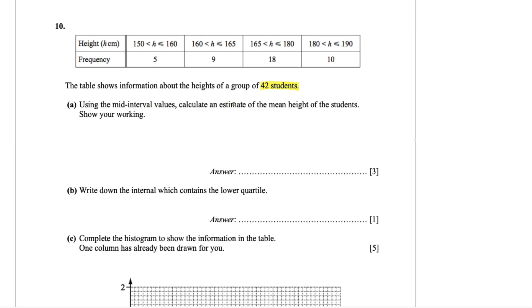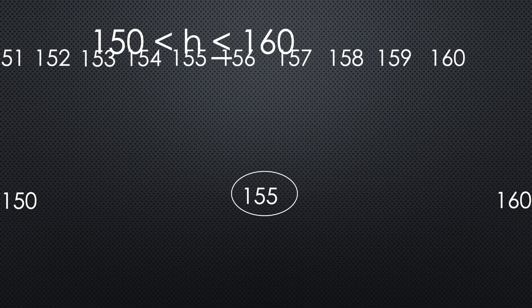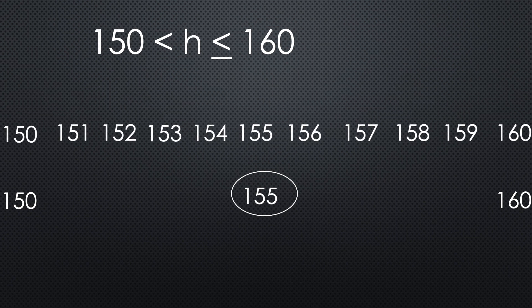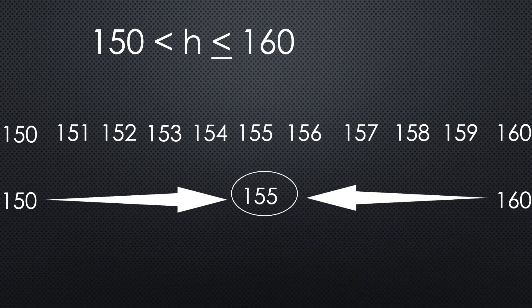Question letter A: using the mid values, calculate an estimate of the mean height of the students. To find the estimated mean in this grouped data, we must determine first the middle values of each class interval. Since all the scores found in each interval can be just anything within the range, the best value that can estimate or represent them is the middle value — in the same reason that we base it to 5 to round up or down a number.